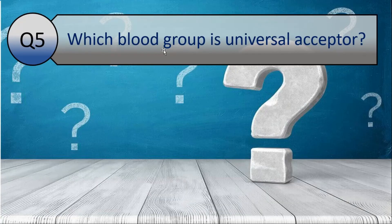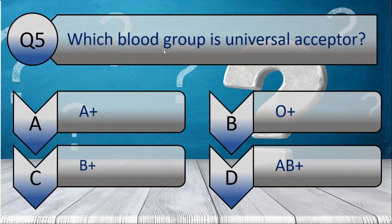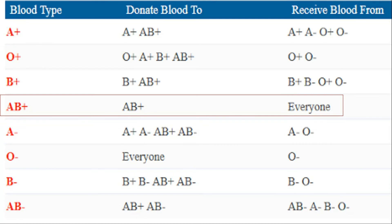Today's last question is: which blood group is the universal acceptor? Your options are A. A positive, B. O positive, C. B positive, and D. AB positive. And the correct answer is D. AB positive. AB positive blood group is called the universal acceptor blood group because a person having AB positive blood group can receive blood from anyone irrespective of the blood group that person has.